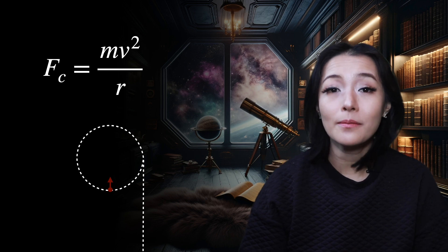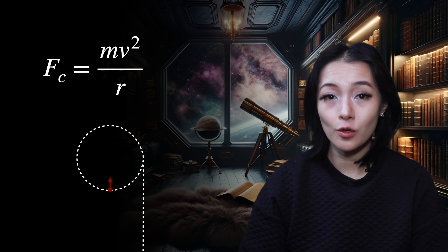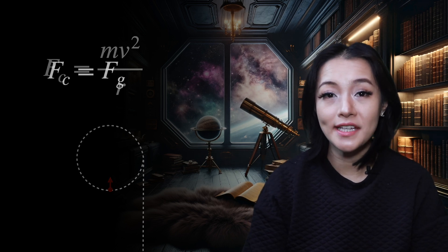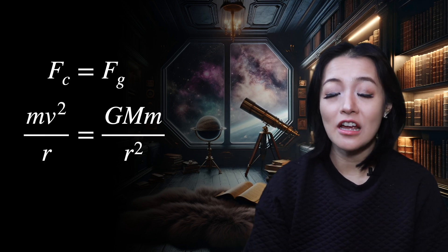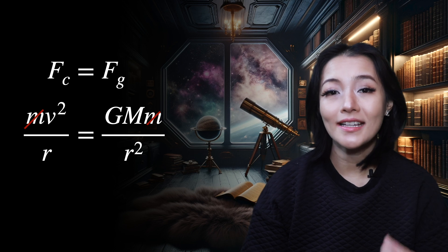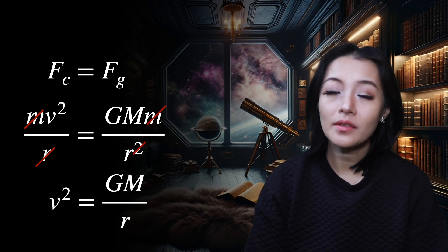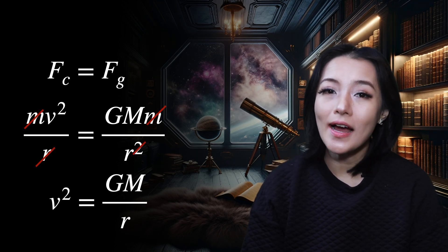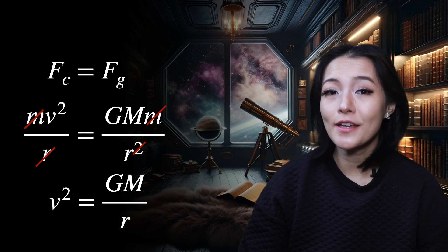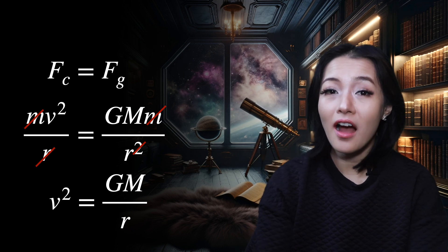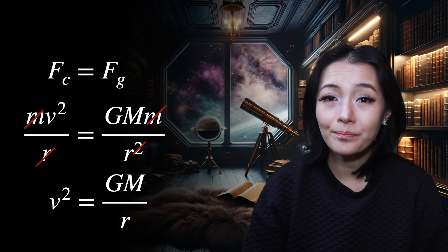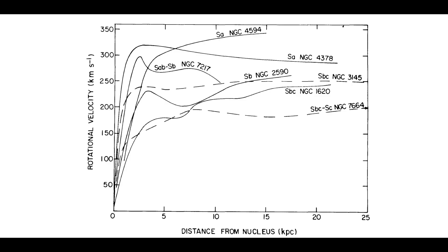For an object in orbit, the gravitational force pulling it towards the center provides the centripetal force required to keep it moving in that circular path. So in equilibrium, those two forces have to be equal: Fg = Fc. We can then solve for the velocity of the star: V² = GM/R. Since V² is proportional to 1/R, this means that if we increase R, V should get smaller.